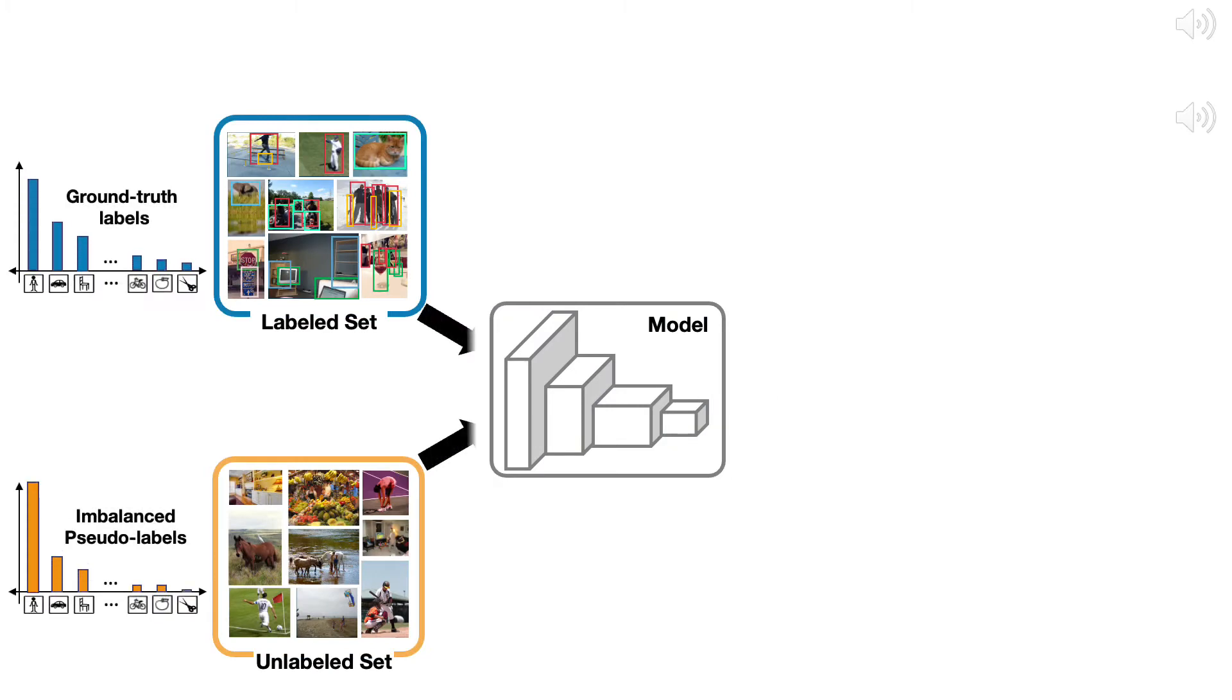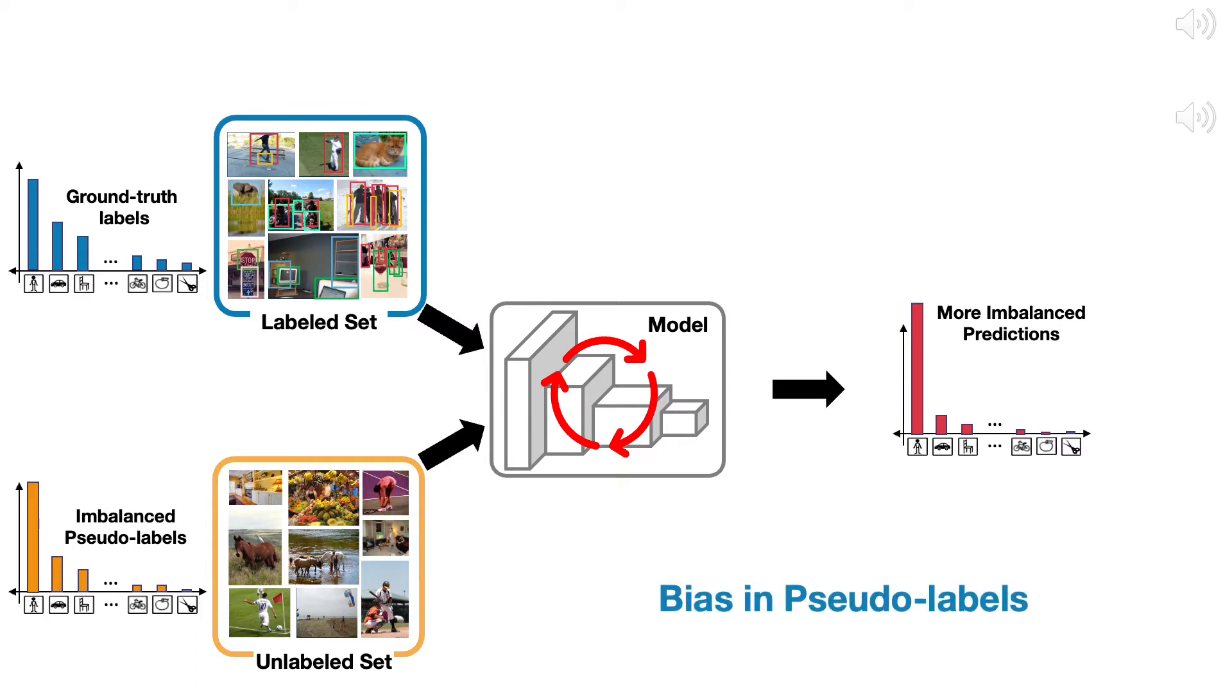As a result, adding biased pseudo-labels into the semi-supervised training makes the class imbalance issue more severe. This is the pseudo-labeling bias issue, which is not addressed in existing works.